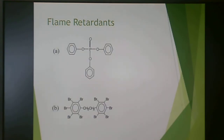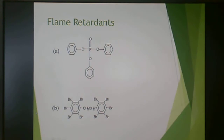Here are some examples of flame retardant compounds — this is a phosphorus-containing one and this is a brominated one. You'll see these frequently for enhancing flame retardancy in polymers.